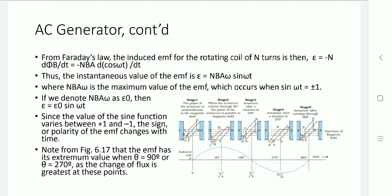Differentiating cos(omega t) gives minus sin(omega t) times omega. So the EMF is epsilon equals NBA omega sin(omega t). When sin(omega t) equals plus one, the maximum EMF is NBA omega. When sin(omega t) equals minus one, the EMF is minus NBA omega. This can be represented graphically. The maximum value is epsilon_0, so epsilon equals epsilon_0 sin(omega t), where epsilon_0 equals NBA omega.